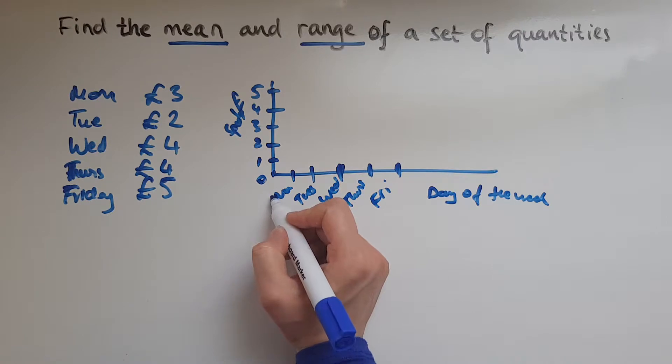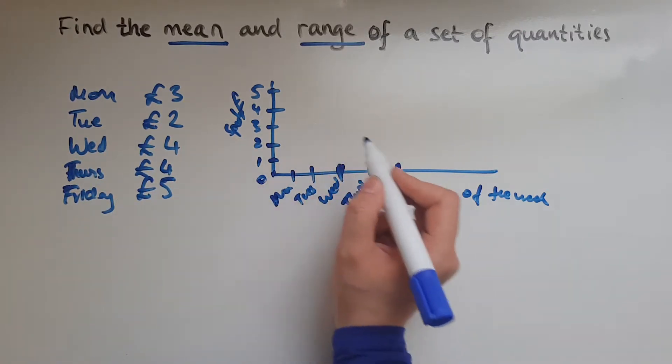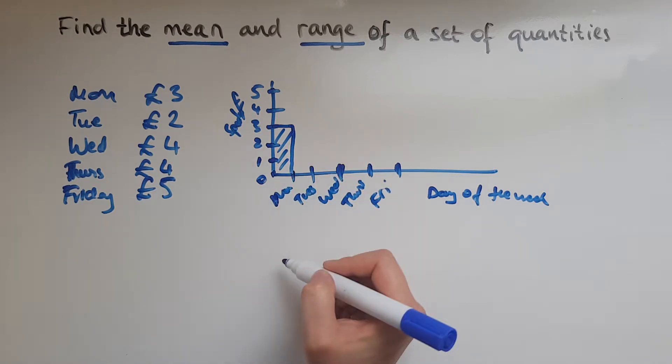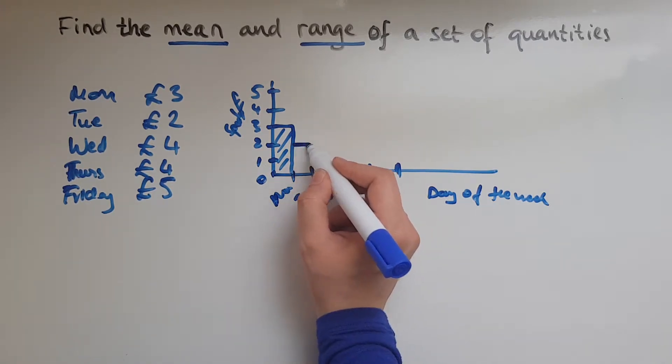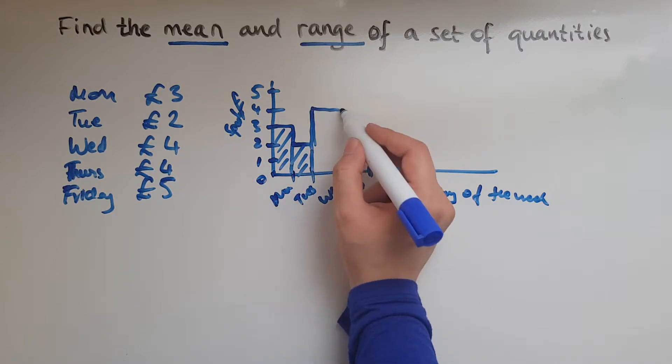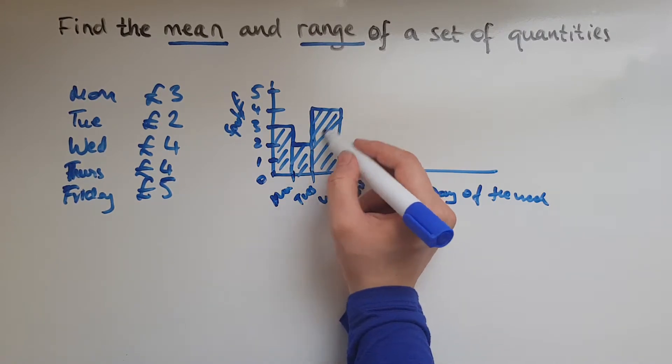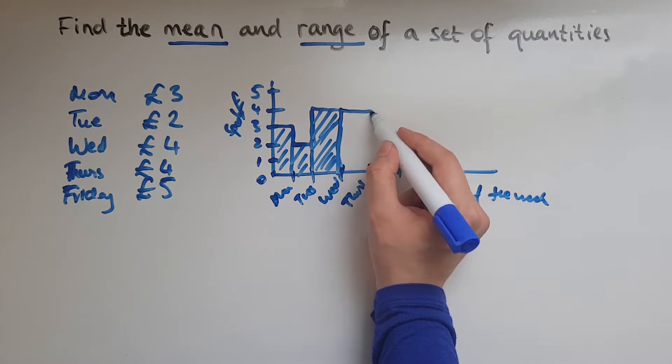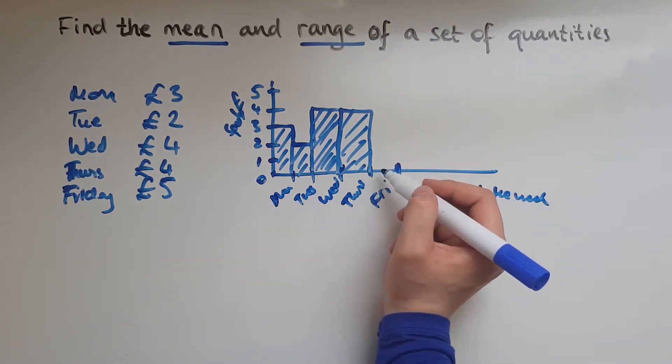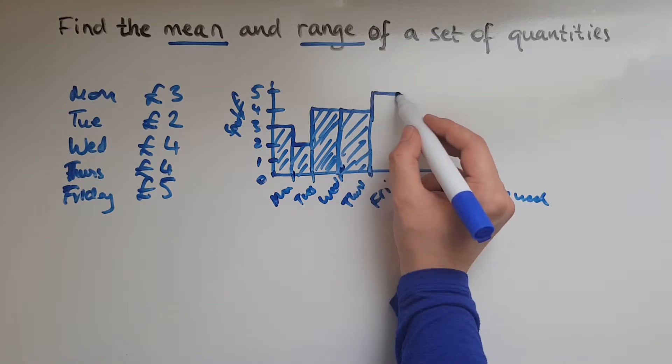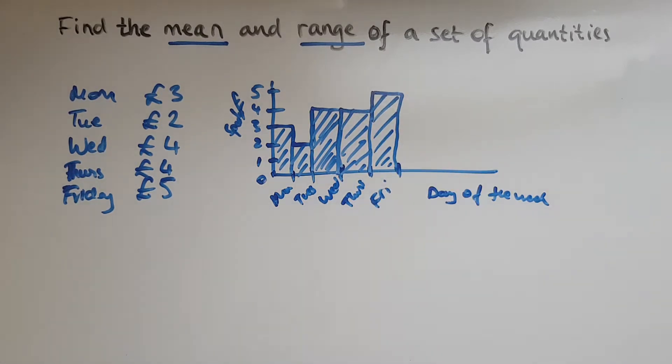So on Monday I spent three, so that amount should go up to three. Tuesday I spent two, so going down. Wednesday that was four, so going up again. And Thursday was the same as Wednesday, so again £4. And Friday was five, so the highest on Friday.